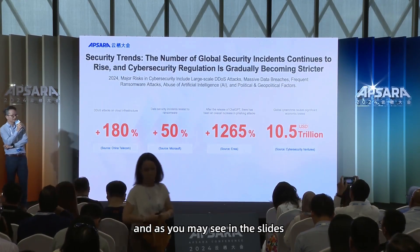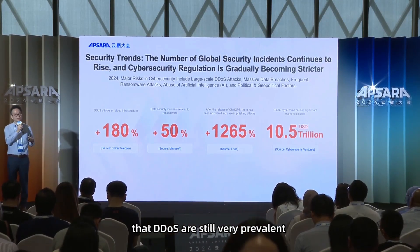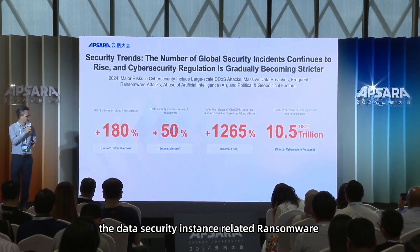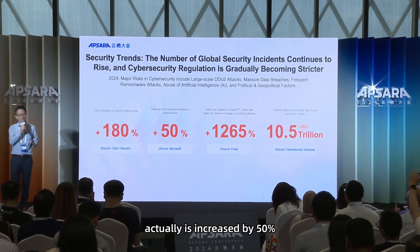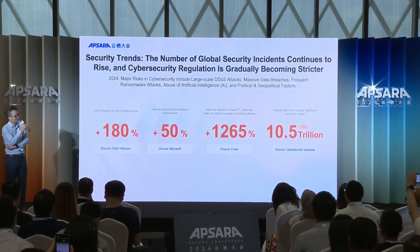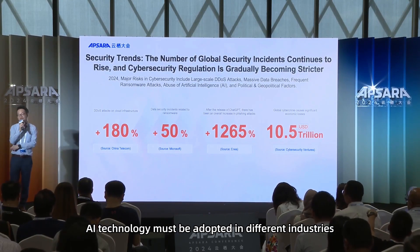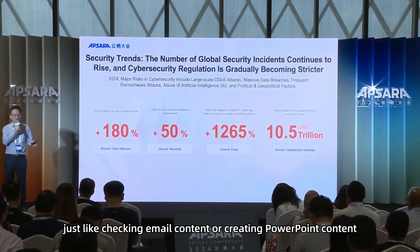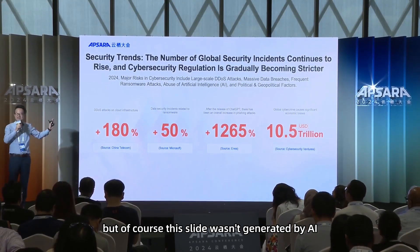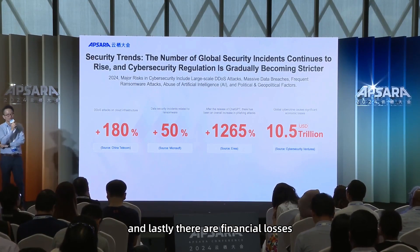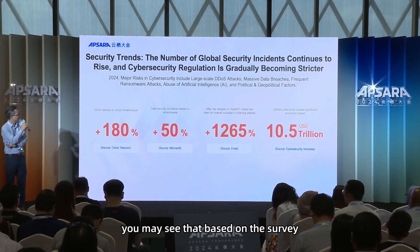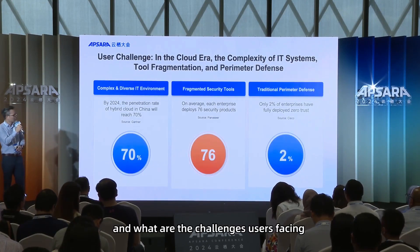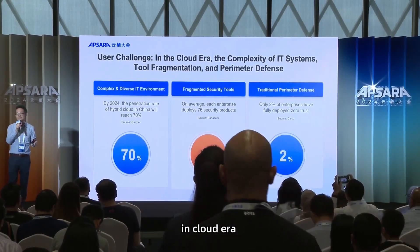As you may see in the slides, DDoS is still very prevalent targeting cloud infrastructures. Data security incidents related to ransomware have increased by 50 percent. AI technology is being mass adopted in different industries and daily activities, such as generating email content or PowerPoint content. And financially, cybercrime is expected to cost 10.5 trillion US dollars last year.